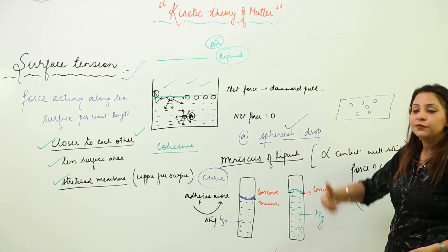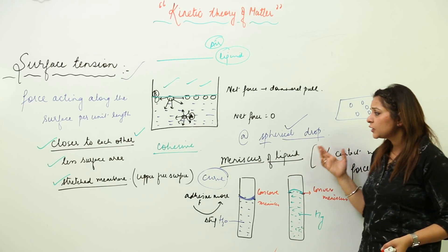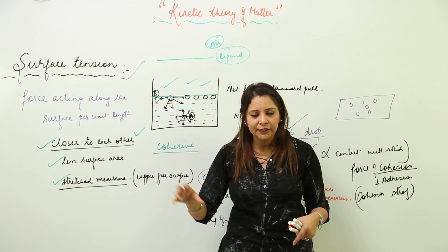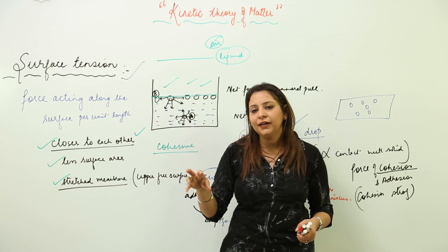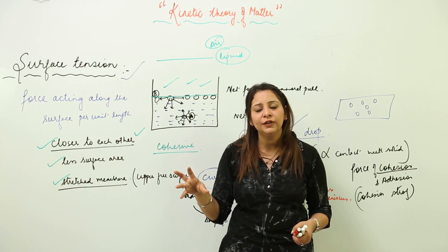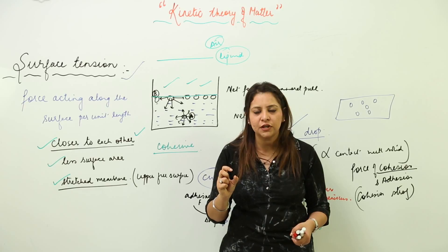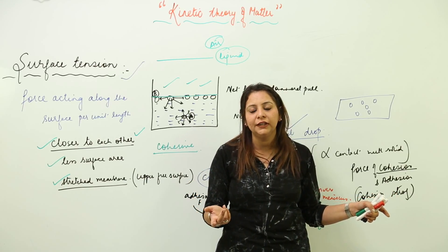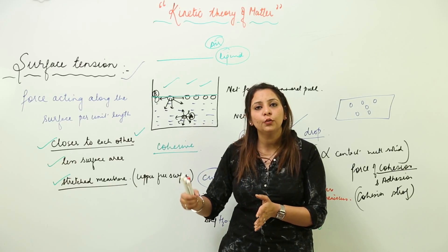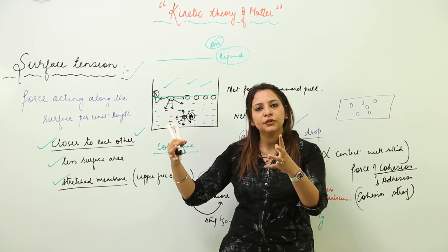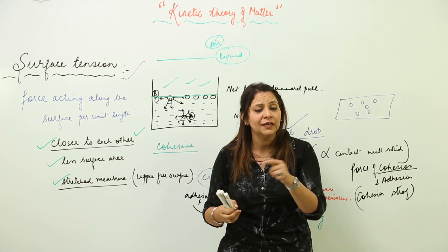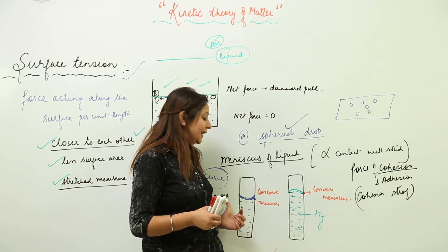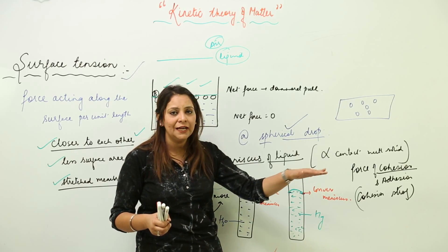One more evidence of surface tension is the spherical drop behavior. If you pour mercury on a glass surface, it acquires a small spherical droplet structure, because the cohesive force in mercury is very strong, causing the molecules to come closer and form a spherical drop. Water, on the other hand, remains scattered on the surface because in water the adhesive force is greater than the cohesive force, so it does not contract into a spherical drop.